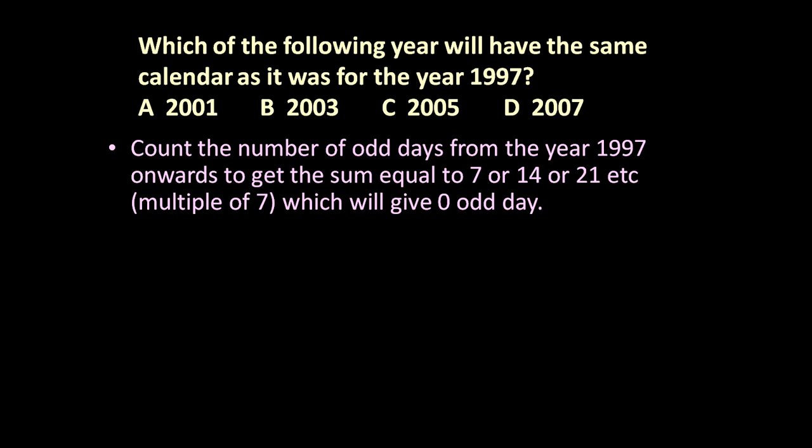Let us determine from year 1997 onwards - so 1997, 1998, 1999, 2000, 2001, 2002, etc. - until we get 7 or 14 or 21 odd days. Let us calculate the odd days.